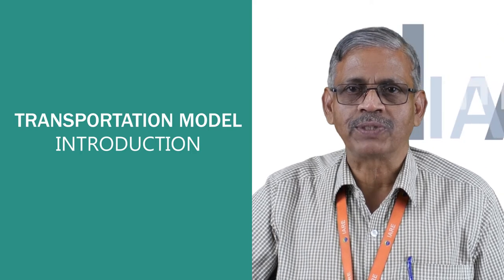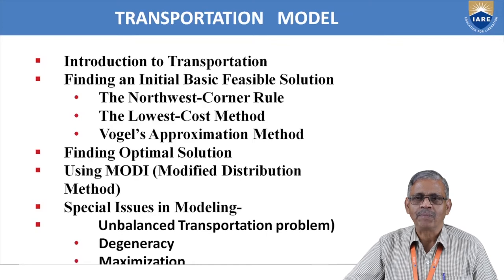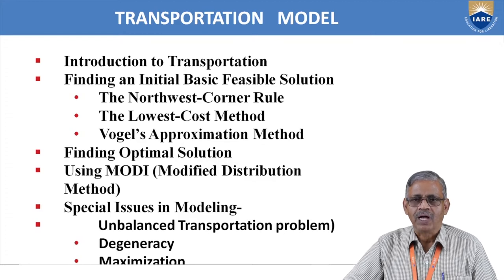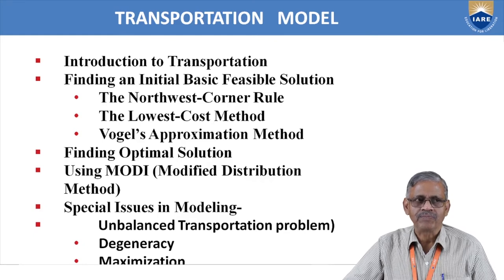Today I am going to explain the transportation model. The transportation model is used to optimize transportation cost. This covers an introduction to transportation, finding an initial basic feasible solution using the North-West corner rule, lowest cost method, and Vogel's approximation method. After finding the initial basic feasible solution, we will find the optimal solution using the Modi method — the modified distribution method. We will also discuss special issues: unbalanced transportation problems, degeneracy, and maximization-type transportation problems.